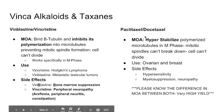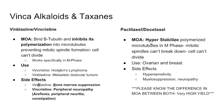The second class is the taxanes: paclitaxel and docetaxel. Their mechanism of action is that they hyper-stabilize the polymerized microtubules. The cell makes microtubules but eventually must break them down. Paclitaxel and docetaxel hyper-stabilize those microtubules in the M phase so the mitotic spindles cannot break down and cells cannot divide. This is a very high-yield point for block and Step 1 exams.